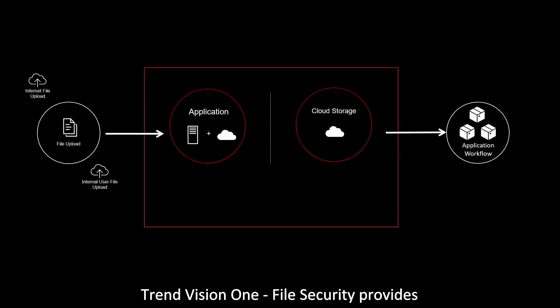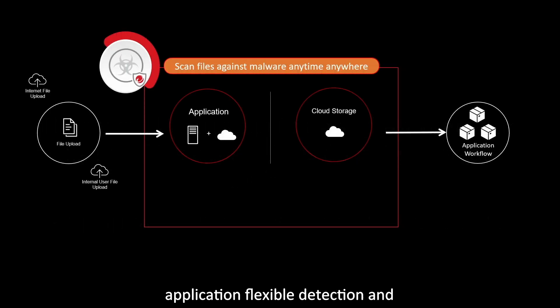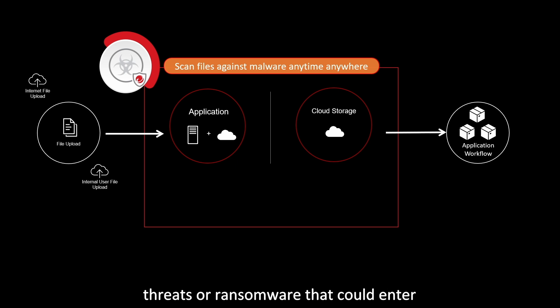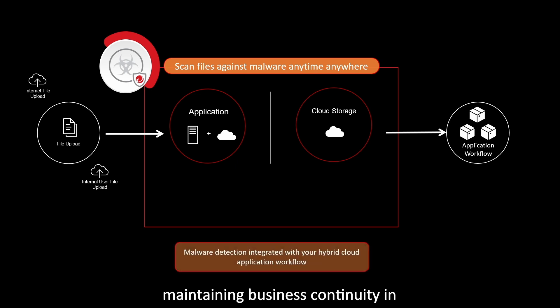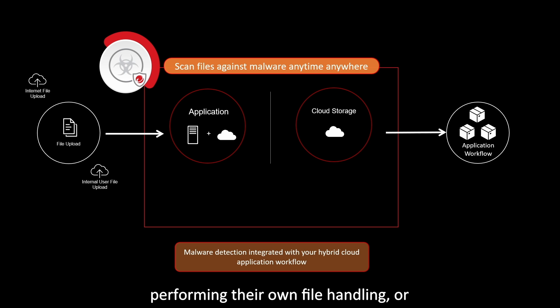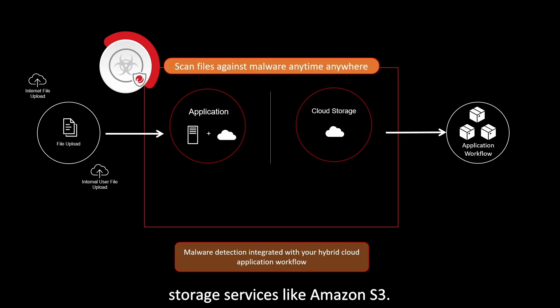Trend Vision 1 File Security provides application-flexible detection and remediation against potential malicious threats or ransomware that could enter through file-based ingress points, maintaining business continuity in systems such as custom applications performing their own file handling, or cloud-based applications that use object storage services like Amazon S3.